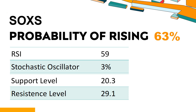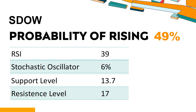Trend Outlook: The probability of SOXS share price rising is 63%. When the probability of rising is higher than 50%, it means the stock has a higher chance of rising. Combining multiple technical analysis indicators, SOXS has 5 bullish signals and 3 bearish signals. SOXS's short-term support level is 21.2; if it falls below 21.2, it will have a chance to test 20.3. The short-term resistance level is 26.6; if it breaks through 26.6, it will look up to 29.1.